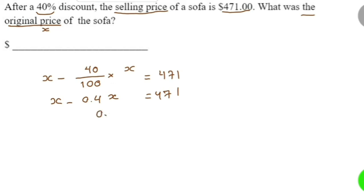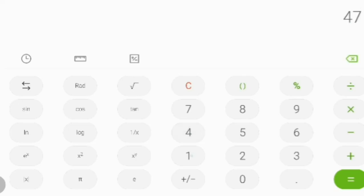So divide both sides by 0.6. You just use the calculator. How do you press the calculator? 471 divided by 0.6, then equal to. You press this way: 471 divided by 0.6 equals...